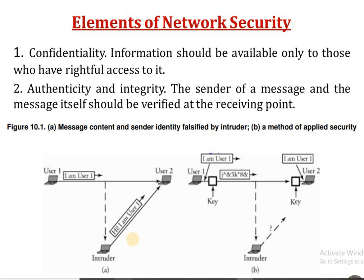We have a diagram with two parts, Part A and Part B. In the first diagram, User 1 wants to send a message to User 2. The message is 'I am User 1,' sent into the network. An intruder can get that message because it is in human-readable form, change the message, and send it to User 2. No security has been provided in the first diagram.